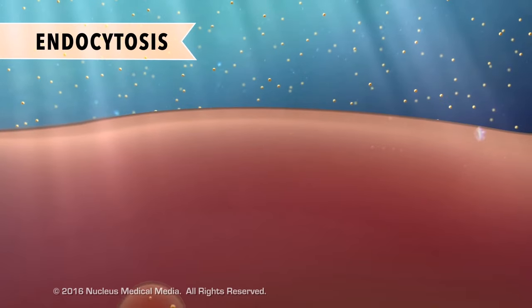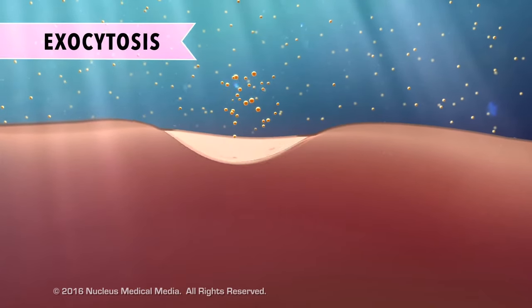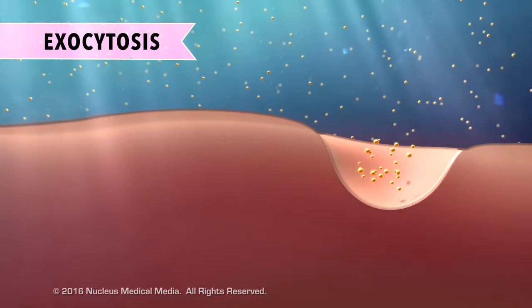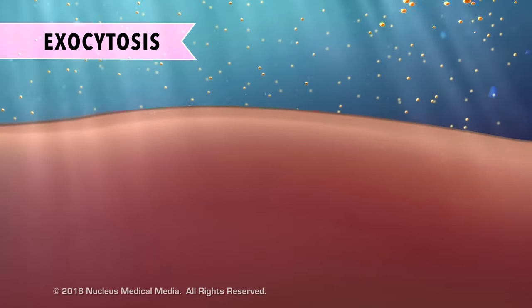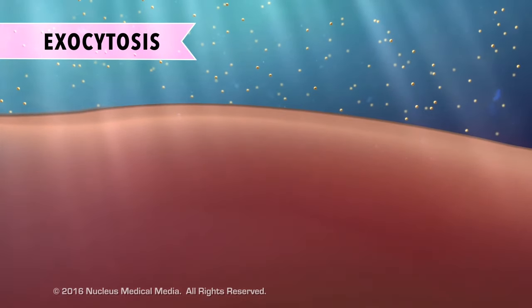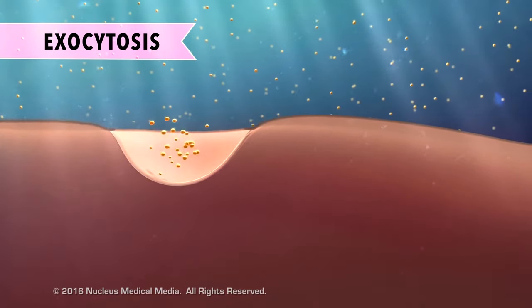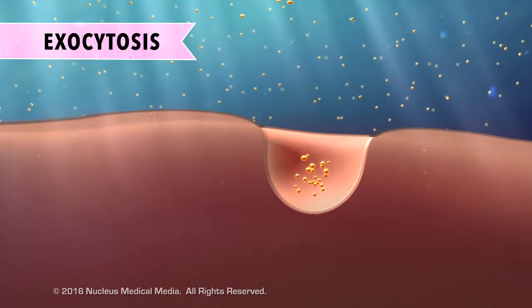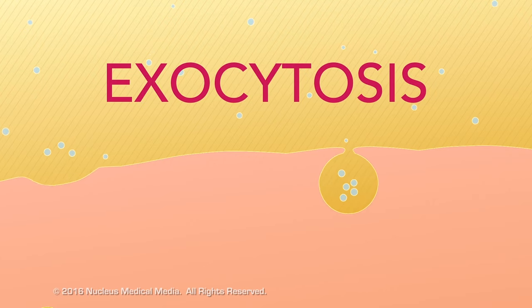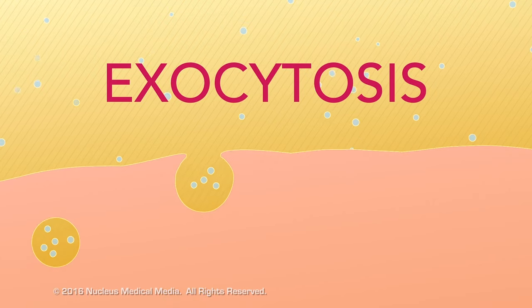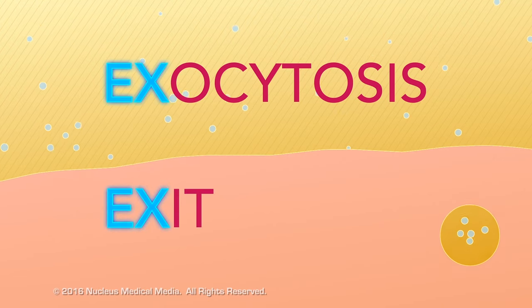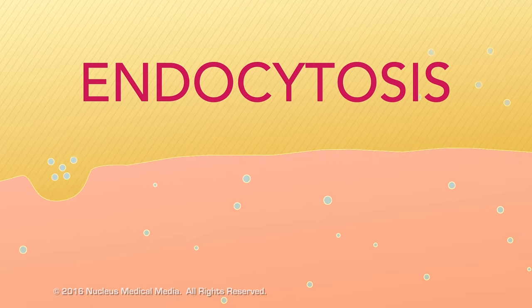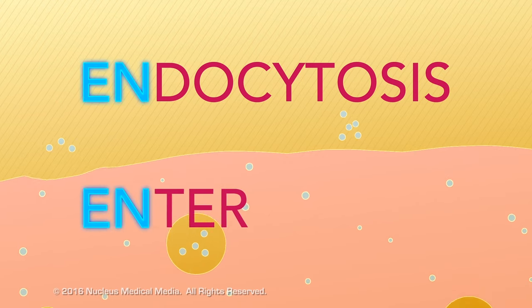The opposite of endocytosis is exocytosis. Exocytosis is when something needs to exit the cell. The cell can remove large molecules or wastes by fusing membrane-bound vesicles containing them with the cell membrane, forcing them out of the cell. A good way to remember that exocytosis is a way for things to leave the cell is that it shares the first two letters with EXIT. You can also remember that endocytosis is a way for things to move into the cell because it shares the first two letters with ENTER.